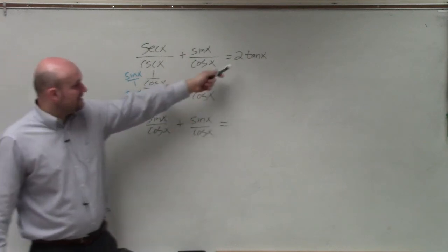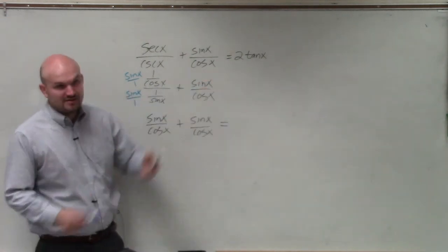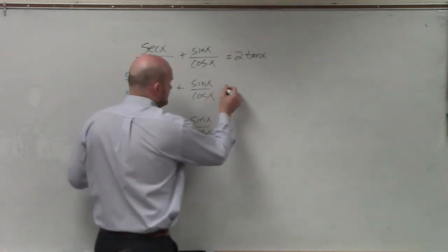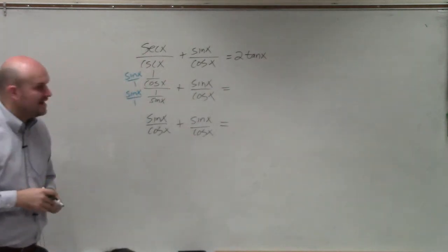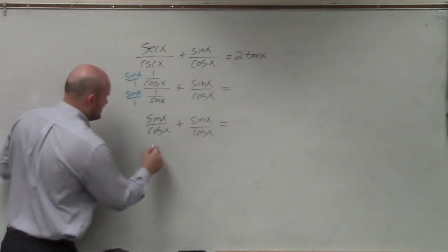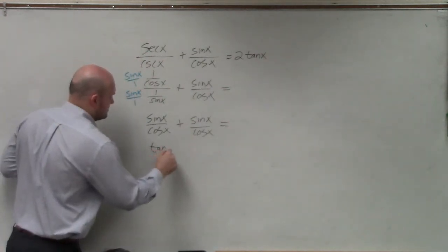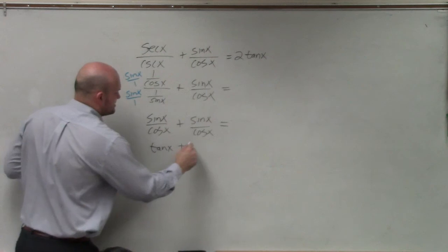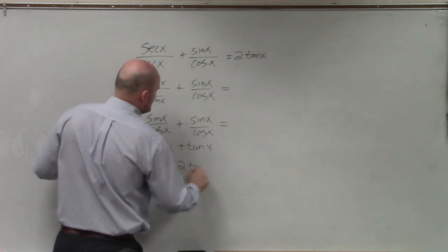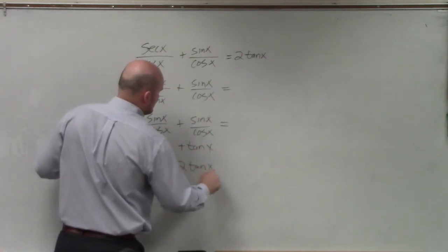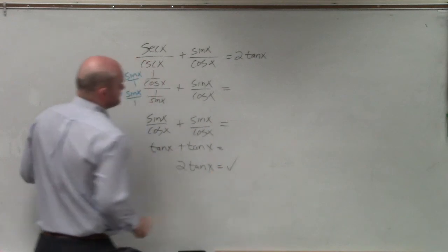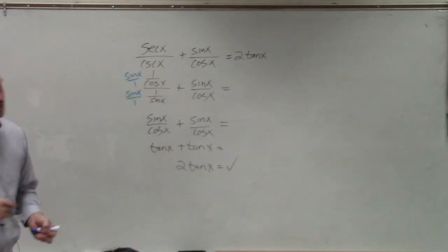Remember, we need to get to tangent of x. Well, what's sine over cosine? Tangent of x. Tangent of x plus tangent of x equals 2 tangent of x. Done.